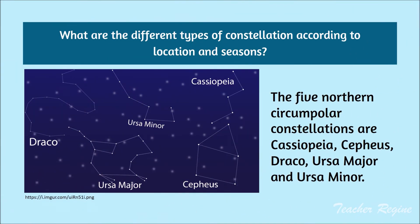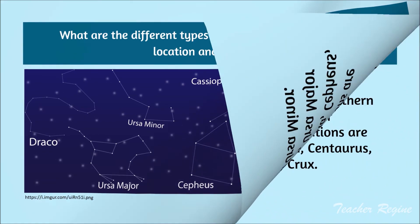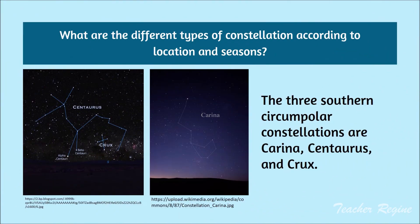The five Northern Circumpolar constellations are Cassiopeia, Cepheus, Draco, Ursa Major, and Ursa Minor. We also have the three Southern Circumpolar constellations, which are Carina, Centaurus, and Crux.